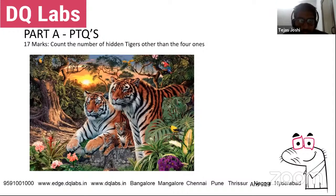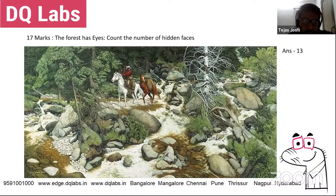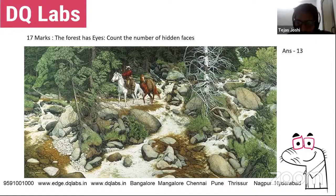In Part A, for the preferential type questions, a few students got the question to count the number of hidden tigers other than the four obvious tigers. This was a 17-mark question testing visual ability and observation skills. The answer was 13. Some students also got the question 'The Forest Has Eyes,' where they had to count the number of hidden faces — that also had an answer of 13, with faces hidden in stones, trees, and landscape features.